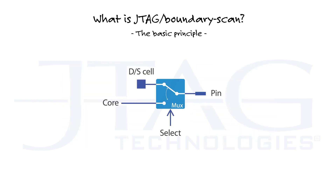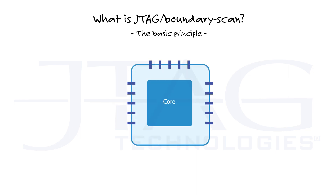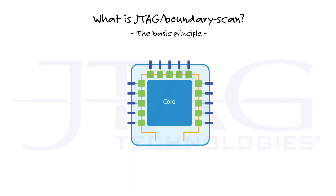This is accomplished by using a multiplexer switch that selects whether the pin is connected to the cell (test mode) or the core (functional mode). By adding a cell to all device pins and connecting these cells in series, a shift register is created along the pins of the chip. This is known as the Boundary Scan Register.